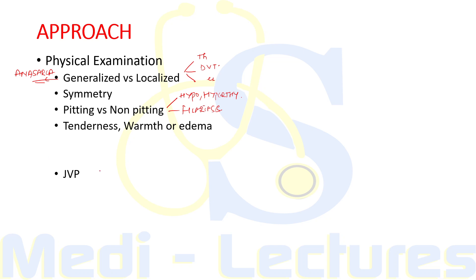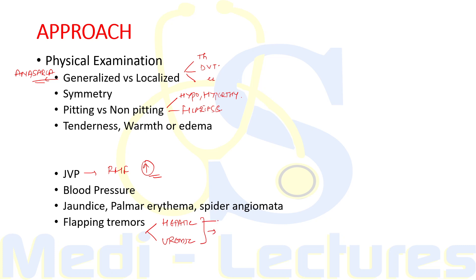JVP in cases of right heart failure will be elevated. Blood pressure will be elevated in chronic renal failure or acute renal failure. Jaundice, presence of palmar erythema, spider angiomata can be suggestive of chronic liver disease. Flapping tremors can be suggestive of both hepatic as well as uremic encephalopathy. The underlying disease can be a cause of edema. So chronic liver disease and chronic renal failure can be the underlying cause of edema.